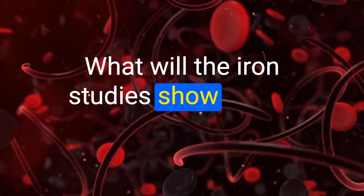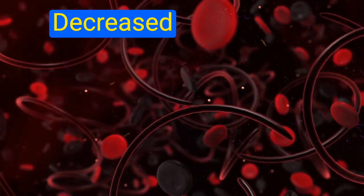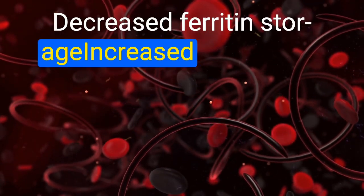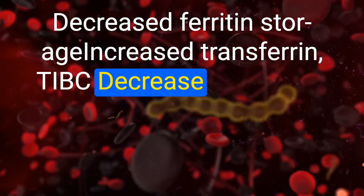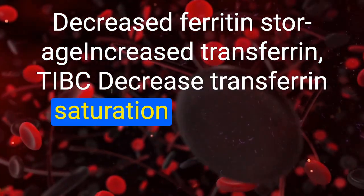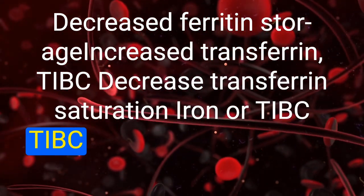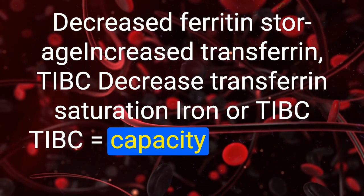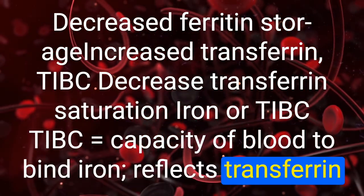What will the iron studies show in iron deficiency anemia? Decreased ferritin (storage), increased transferrin and TIBC, decreased transferrin saturation (serum iron divided by TIBC). TIBC equals the capacity of blood to bind iron.